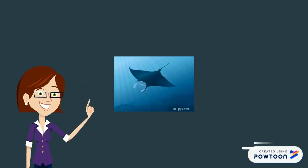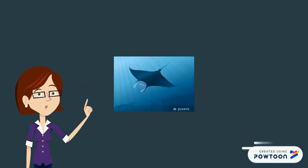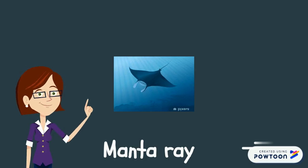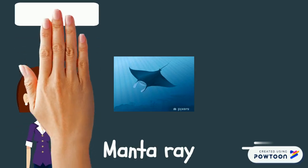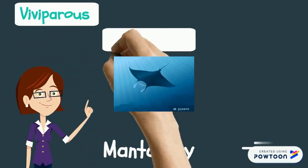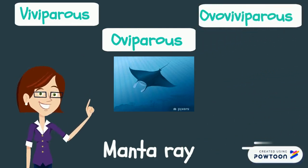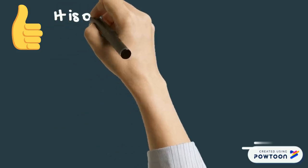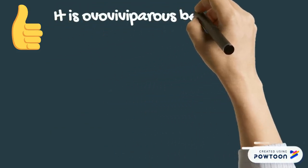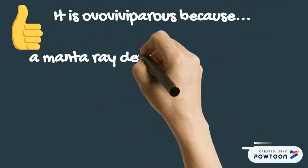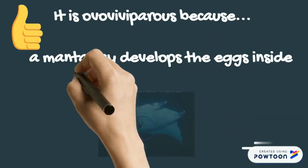And how is the reproduction of a manta ray — viviparous, oviparous, or ovoviviparous? Yes, it is ovoviviparous, because a manta ray develops the eggs inside the body of the mother.